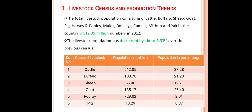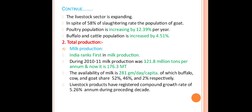Starting from 1919, the total livestock population consisting of cattle, buffalo, sheep, goat, pig, horse, pony, mule, donkey, camel, and mithun in the country is 512.5 million numbers in 2012. The livestock population has decreased by about 3.33 percent over the previous census. This table shows the class of livestock population in millions and population in percentage across various census years.